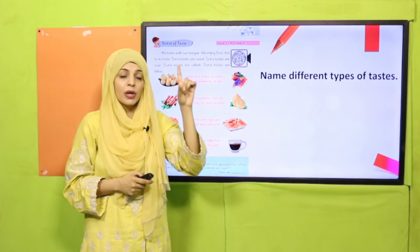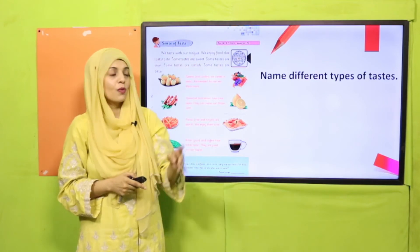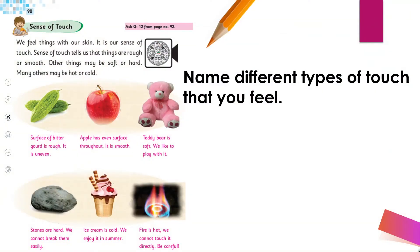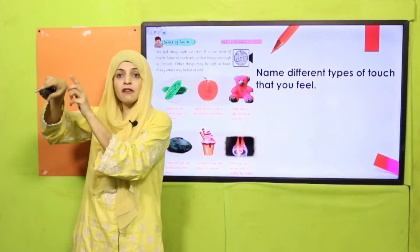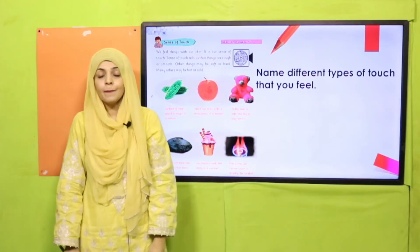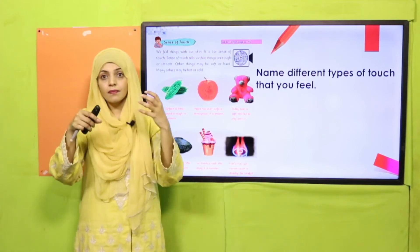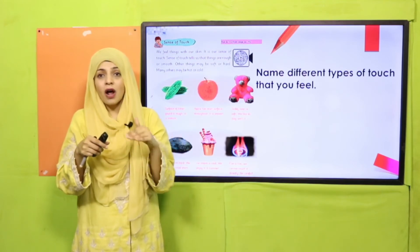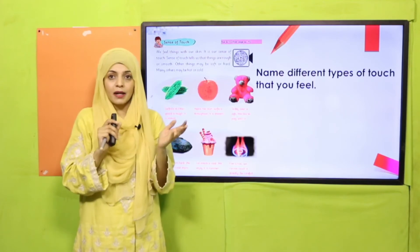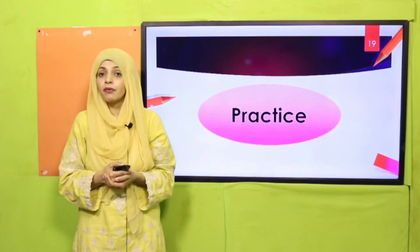Name the different types of tastes: sweet, sour, bitter, and salty. Very nice! Now we move to page number 90, which covers the sense of touch. Which part of the body feels touch? — The skin. Name different types of touch that you feel: soft, hard, smooth, rough, and hot or cold.